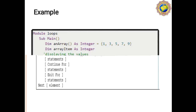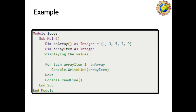Now here is an example of using the For Each Next loop. First, we declare variables using the Dim keyword inside the Sub Main function. The Sub Main function in VB.NET is similar to the void main function in C language.